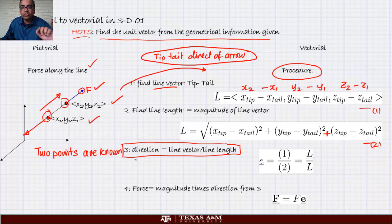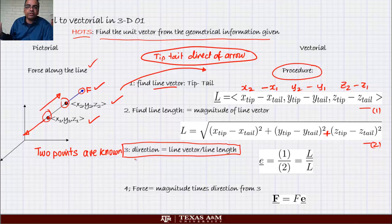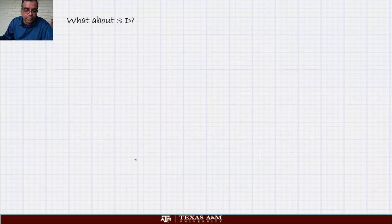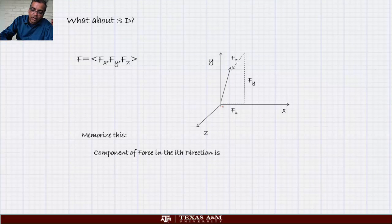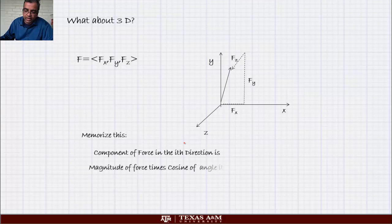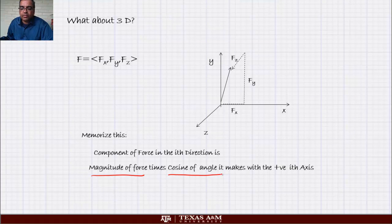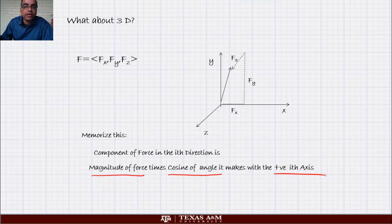After this you can go and see the worked example where we show how to use this. It's a fairly straightforward algorithm. Just to summarize: if you are given a force vector and want to find its components, the component in the i-th direction equals the magnitude of the force times the cosine of the angle it makes with the positive i-th axis. This is useful and you'll be using it everywhere. That's it, thank you.